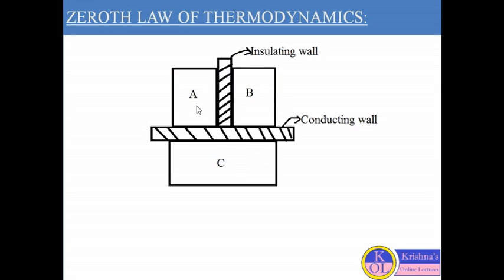Body A and body B are separated by one insulating wall. This insulating wall means there is no heat transfer between body A and body B. The insulating wall resists the heat transfer from body A to B or from body B to A.